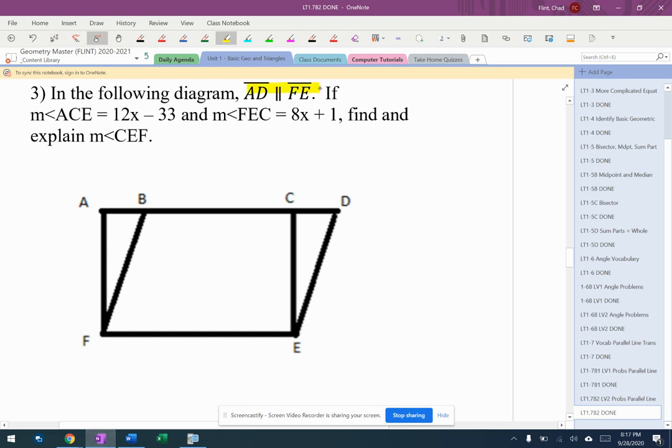All right, so let's highlight our lines so we know what's what. AD is here, FE is here. There's lots of lines zigzagging there, so I don't know which one's going to be my transversal yet. ACE is right there, and FEC is right here.